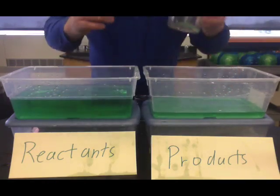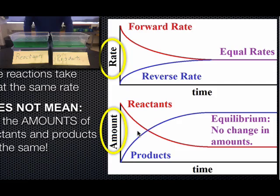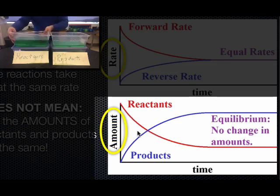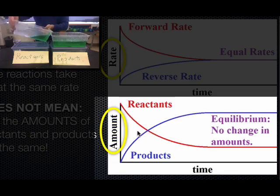So if we go back to the idea of the graph in our notes again, we see the bottom graph shows the amount. And in that graph, reactants were in red and products were in blue, I believe. So that was a product favored. So let's reset that to look like product favored.